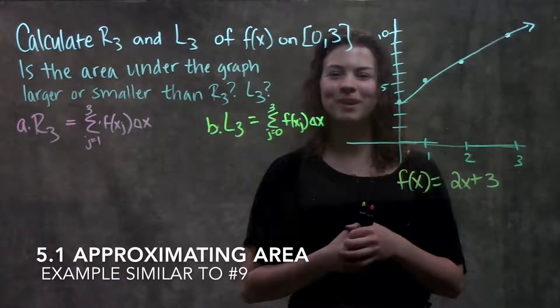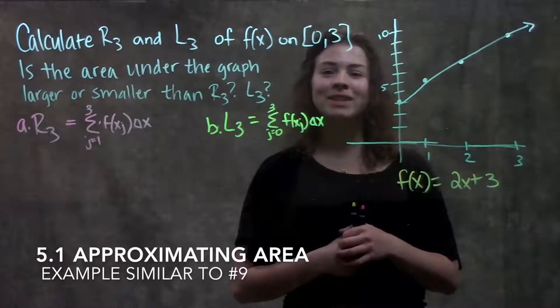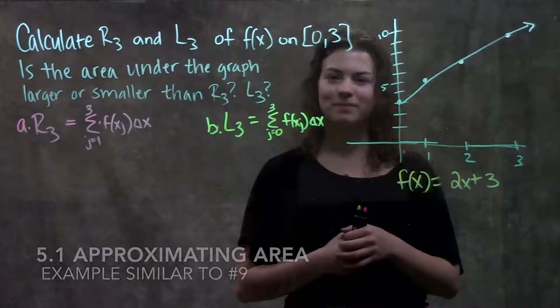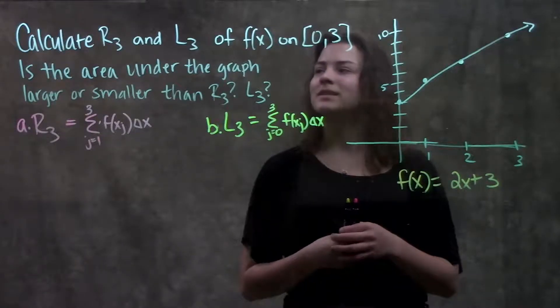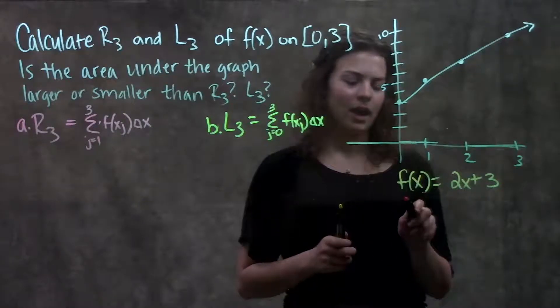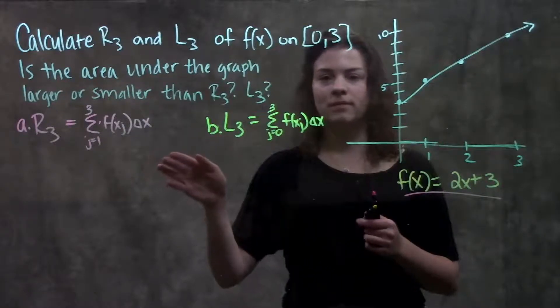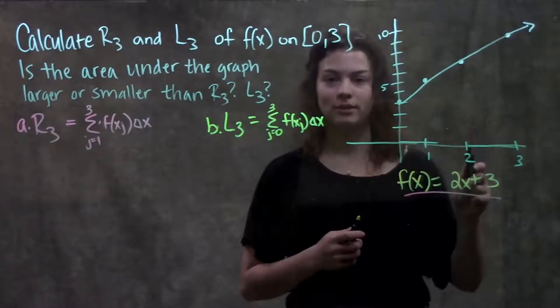This is section 5.1, approximating area. In this video we're going to go through an example problem that's really similar to number 9 in your book. This problem asks us to calculate R3 and L3 of this function on the interval from 0 to 3, and then compare our estimated values with the actual area underneath the graph.